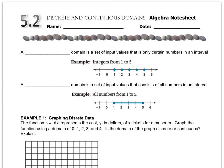In this lesson, we look at what's called a discrete or a continuous domain. The first example gives a picture of a discrete domain.